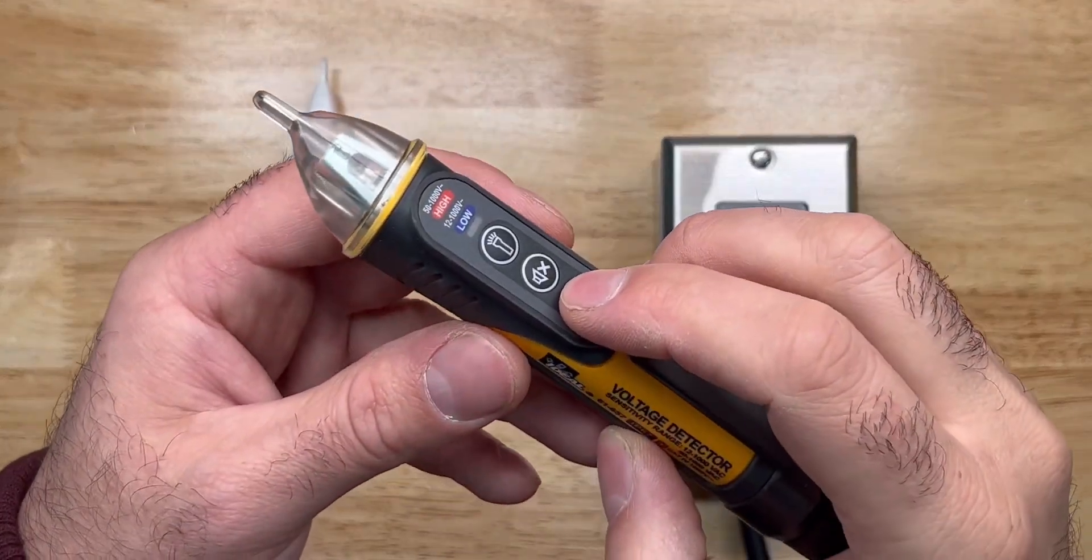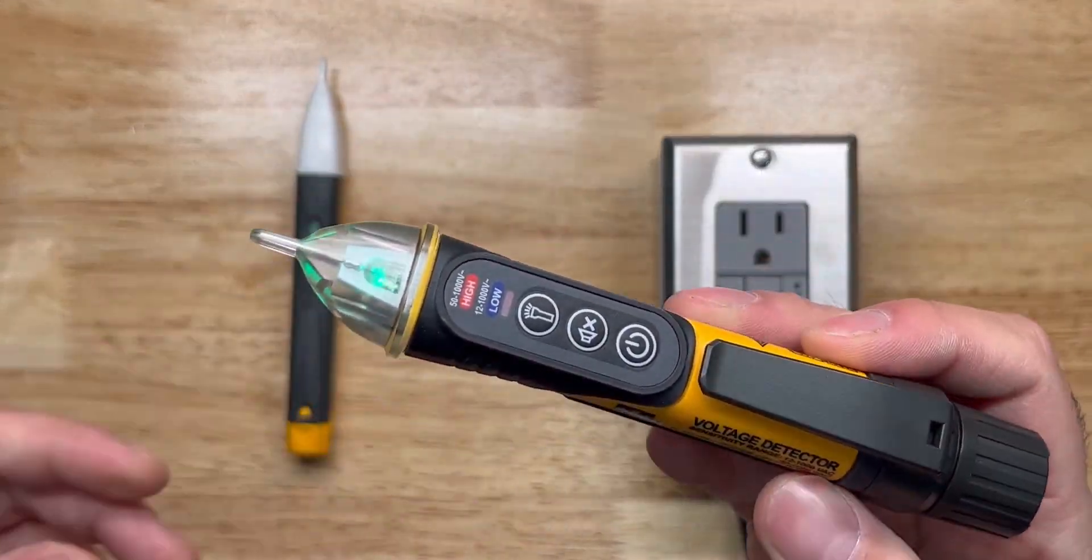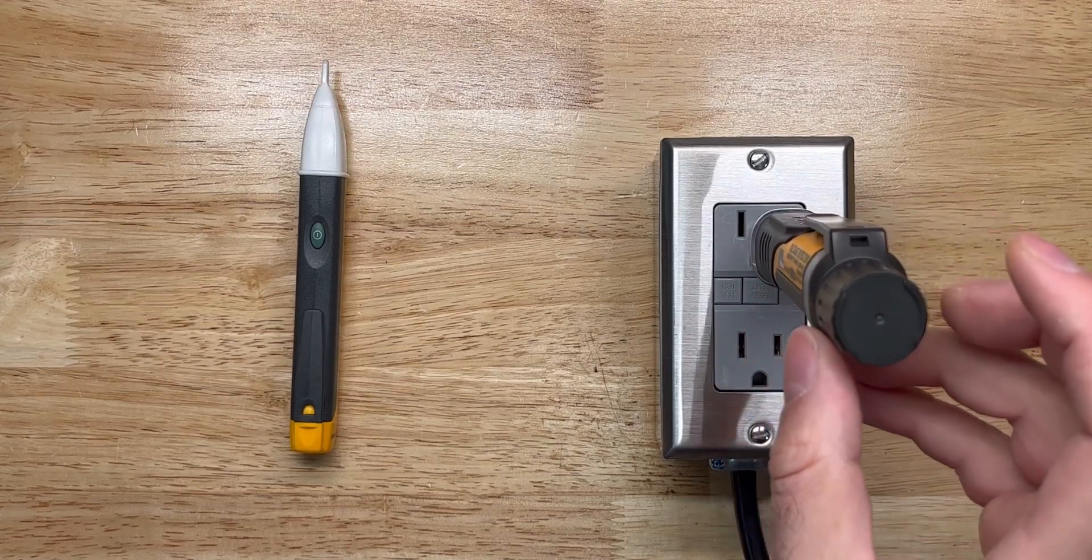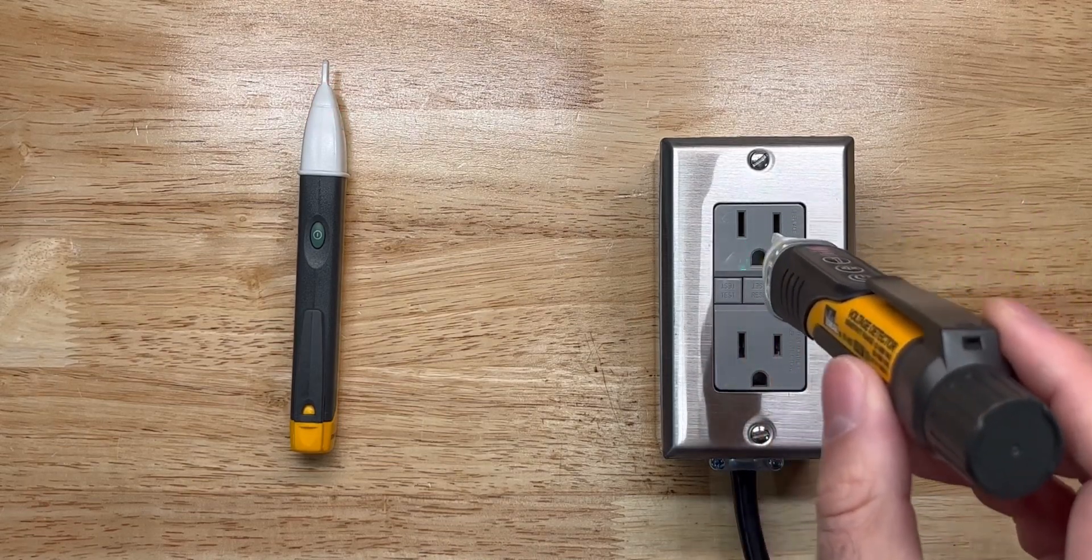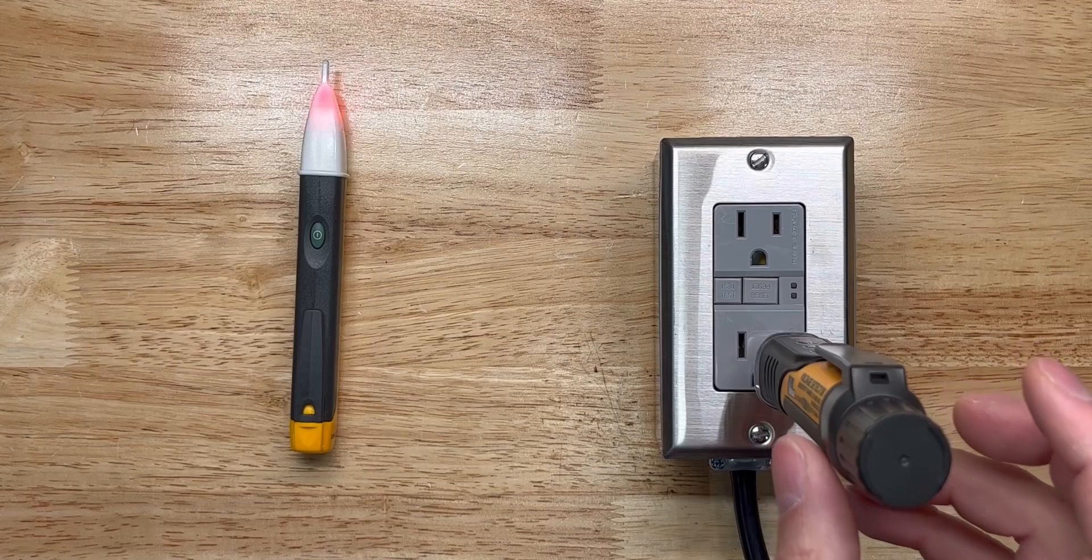I do get my ideal voltage detector and do sit it on the outlet. It's already alerting, no pressure.